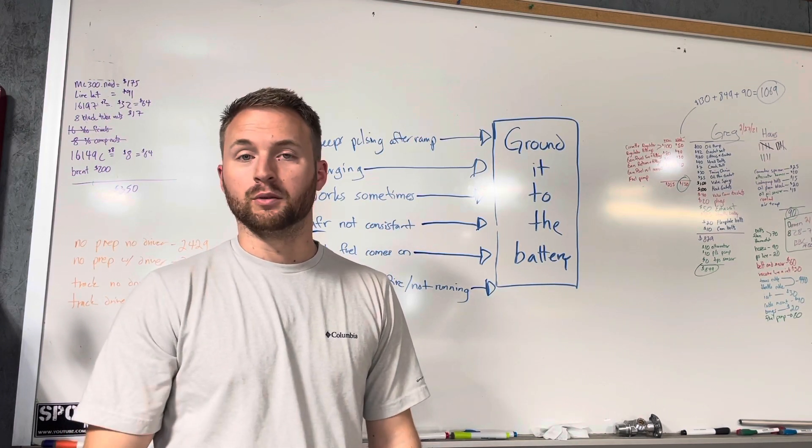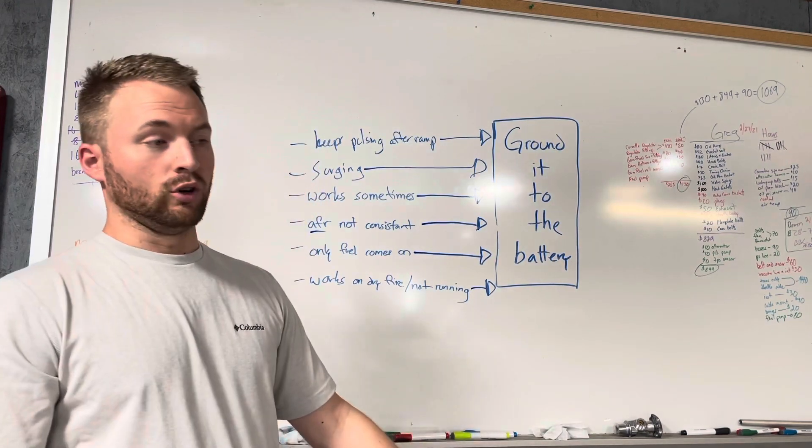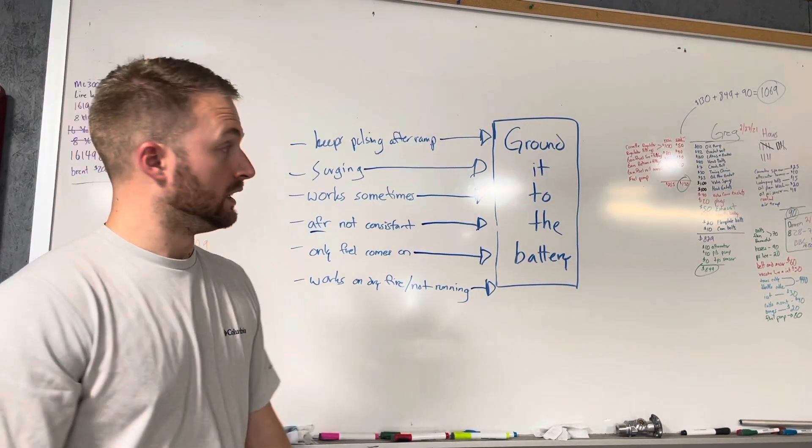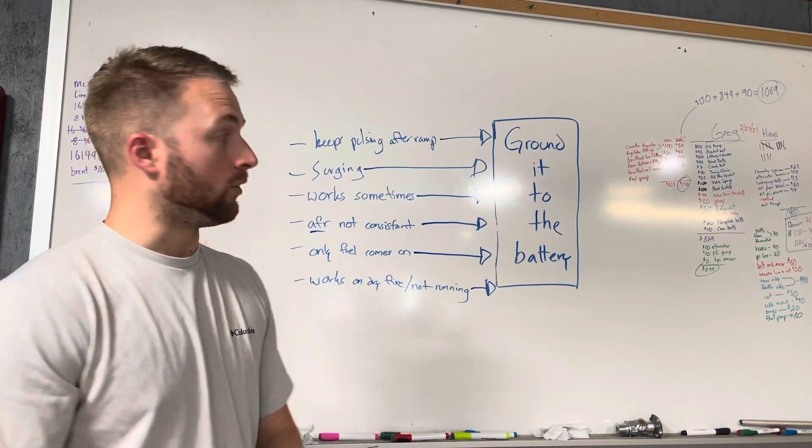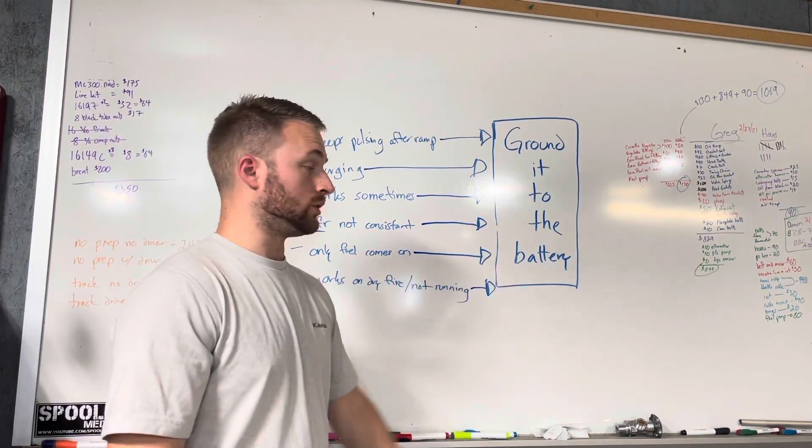If there's not enough power, the fuel solenoid will open, the car will fall on its face. If you check that you have enough power, you should make sure your progressive controller is grounded directly to the battery.